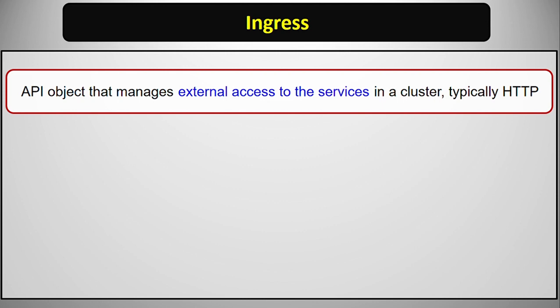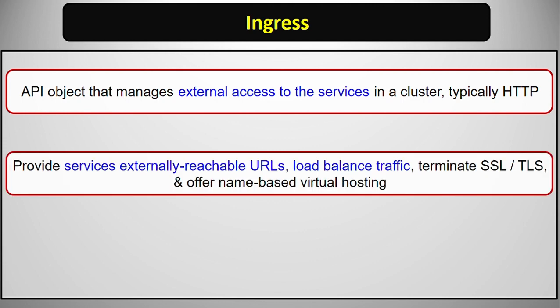Ingress is an API object that manages external access to the services in a cluster, typically through HTTP but we can also use HTTPS. It provides services that are externally reachable URLs, load balance traffic, terminate SSL and TLS, and offer name-based virtual hosting.